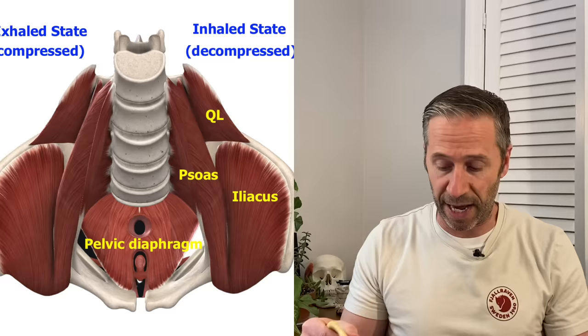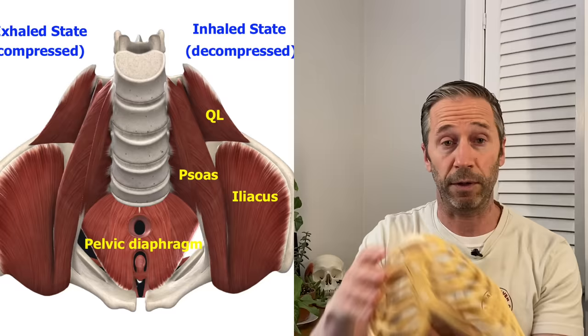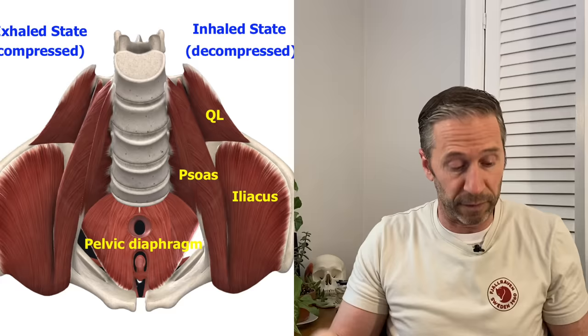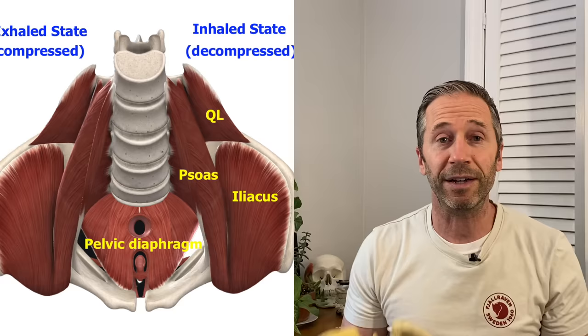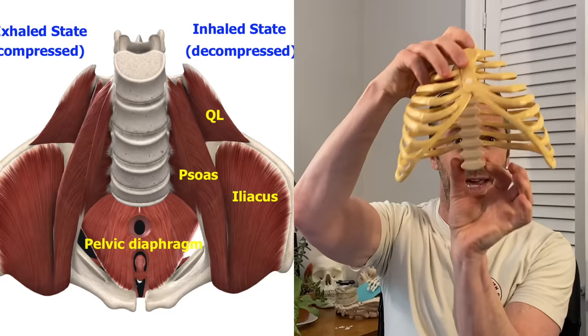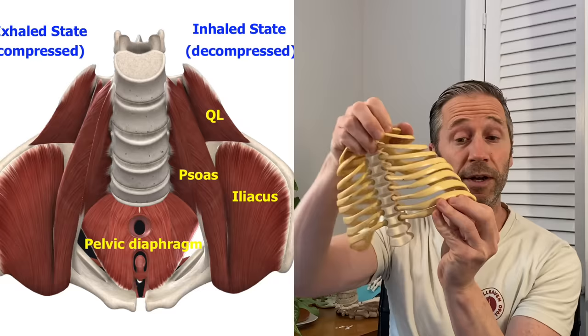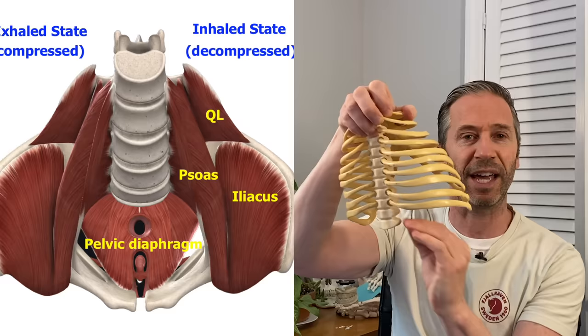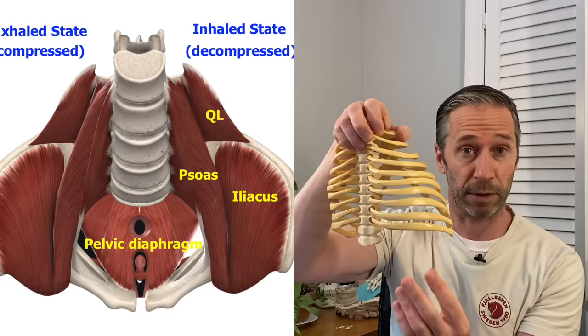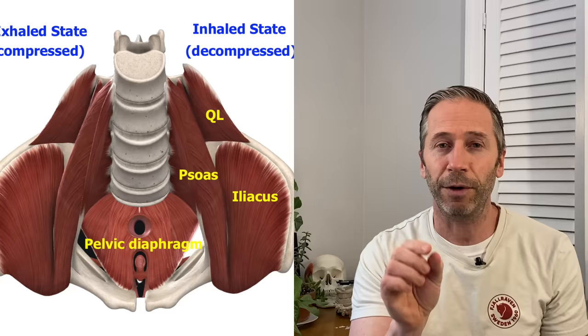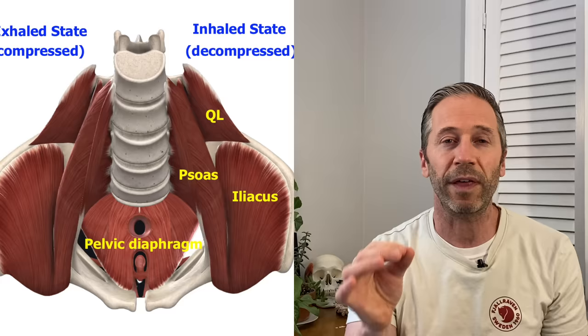The QL attaches to the top of the ilium on each side — remember, you have two. The psoas, because it's on the lumbar spine, comes through the pelvis and attaches to the femur in the front. They both act on the transverse processes of the lower lumbar vertebrae — these edges here. The QL also attaches to the bottom floating rib, the 12th rib. Because of that, they work in conjunction. You can't simply try to stretch a QL without taking into account what the psoas is doing.